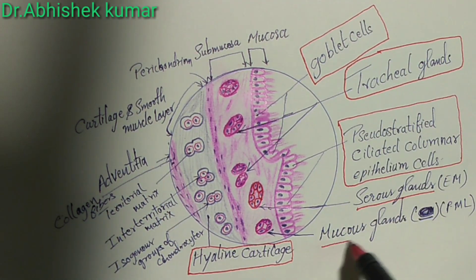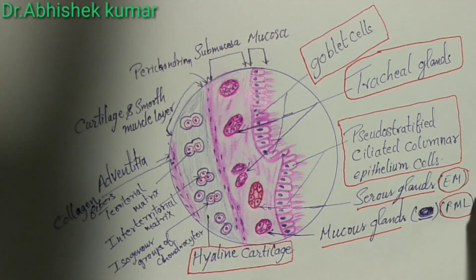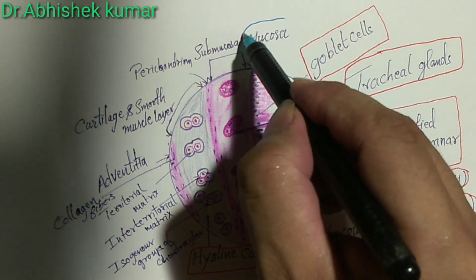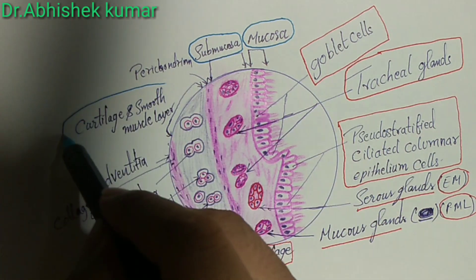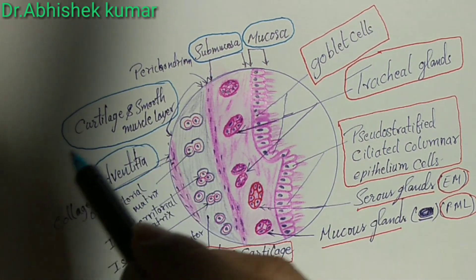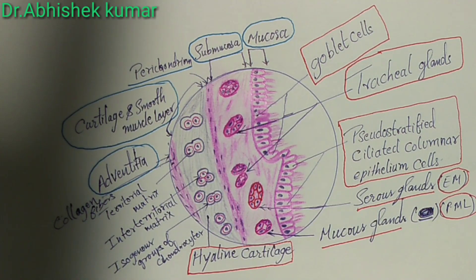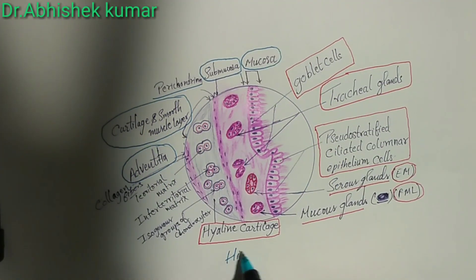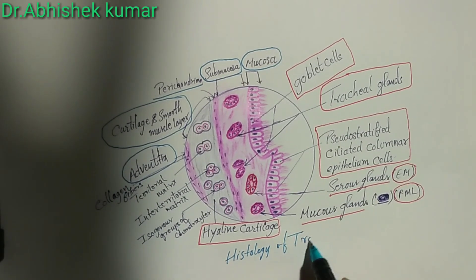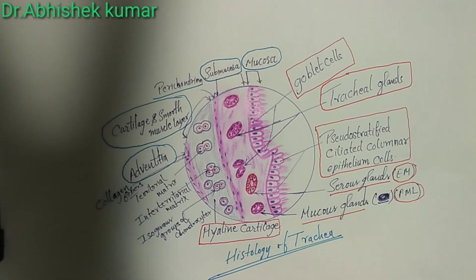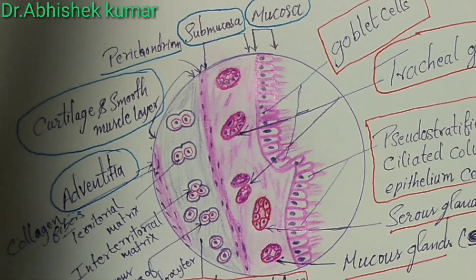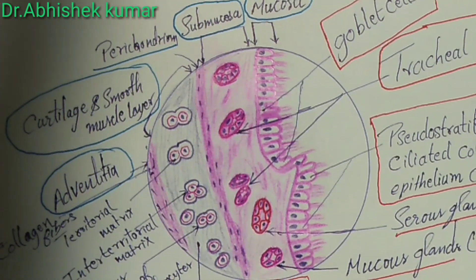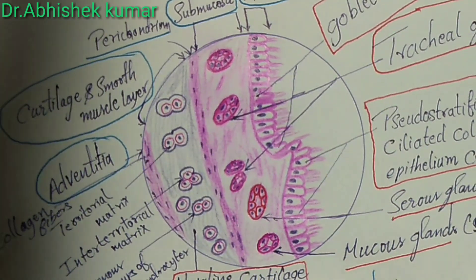In red color we label all the identification points for trachea — goblet cells must be present. The four layers of trachea are: mucosa, submucosa, cartilaginous and smooth muscle layer, and adventitia. Identification points are: goblet cells, tracheal gland, pseudo-stratified ciliated columnar epithelium, and hyaline cartilage — all must be present histologically to identify the trachea.